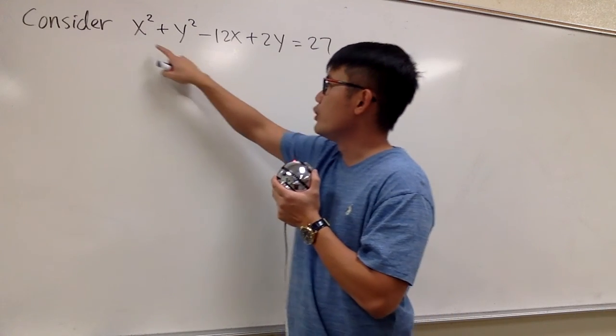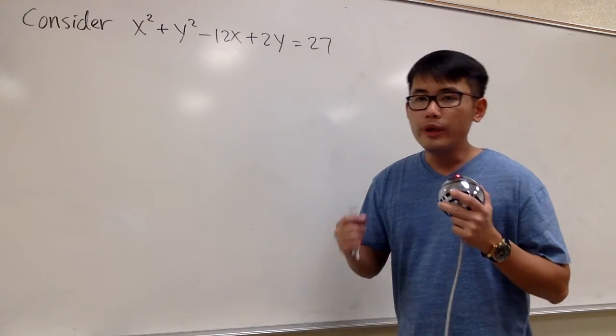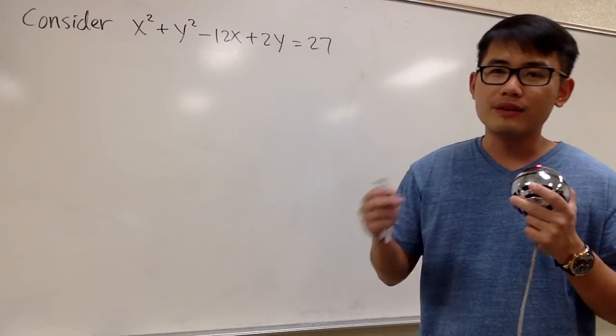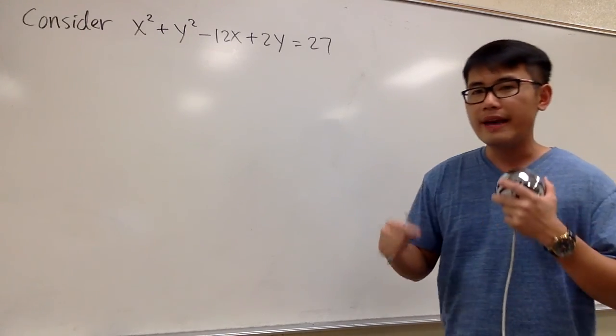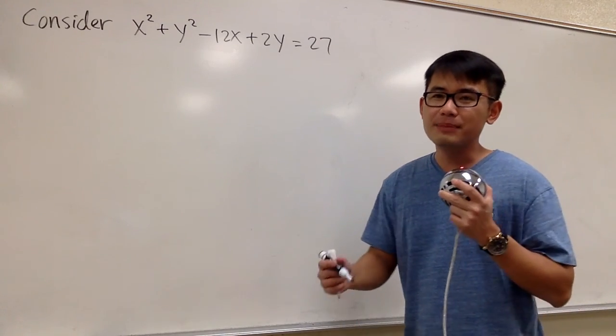Notice that we do have the x being squared plus y being squared. We are going to complete the square twice, one time for x, the other one for y, so that we can write this equation into the standard form of a circle, and then we can figure out the center and the radius of the circle.